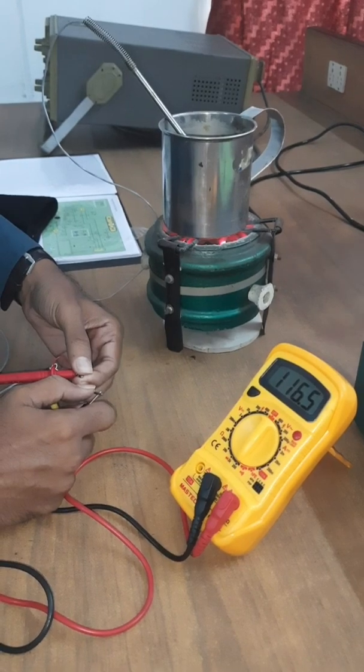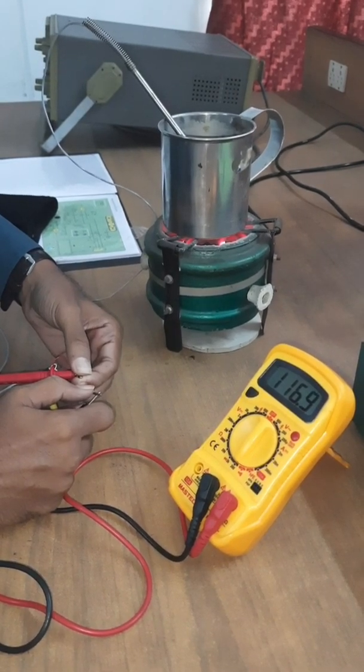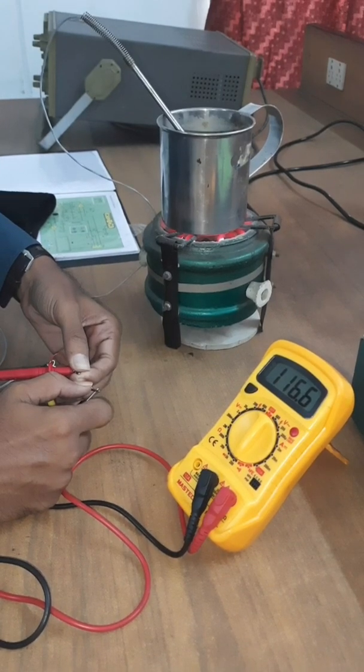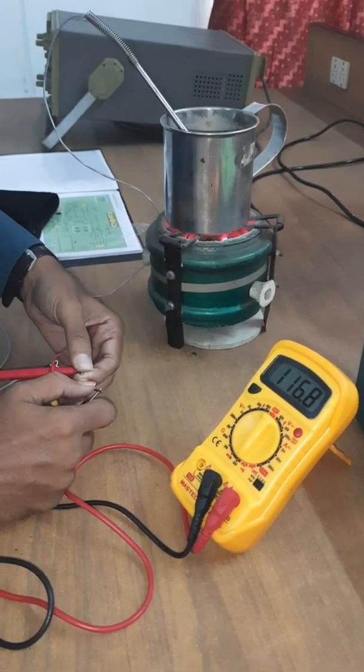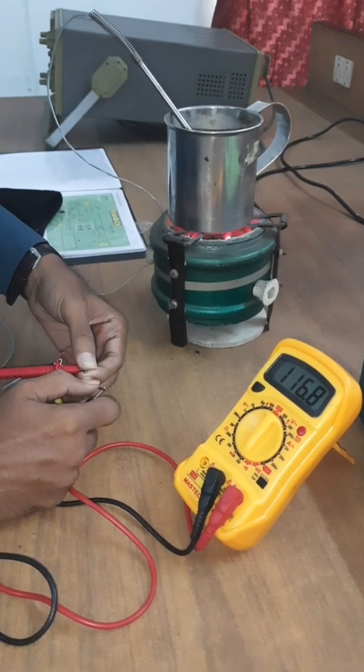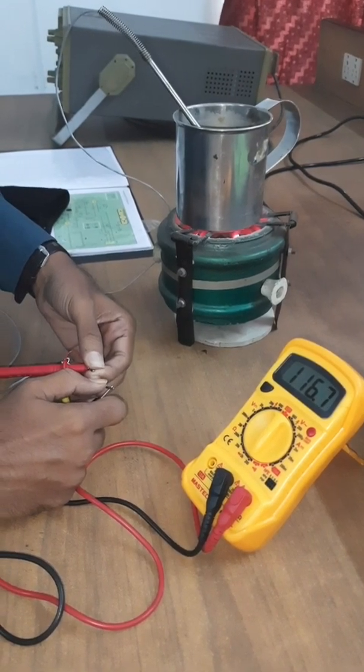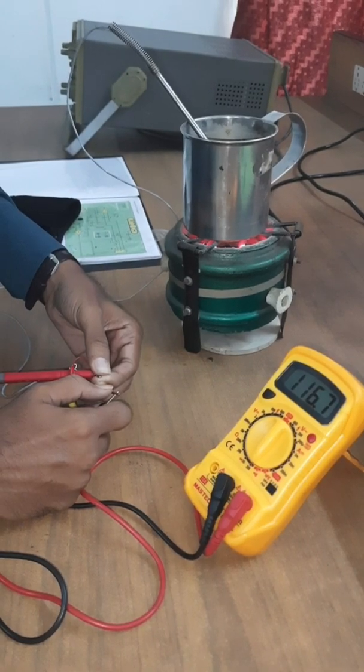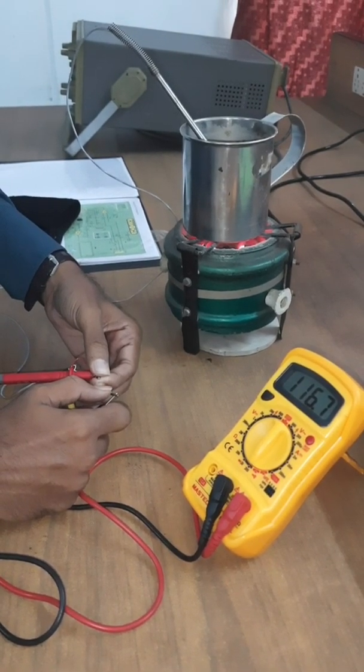It's around 116.2. What you should observe is that this resistance will keep on increasing because we are heating this process fluid and RTD being a positive temperature coefficient resistance material, its resistance will increase as temperature increases.